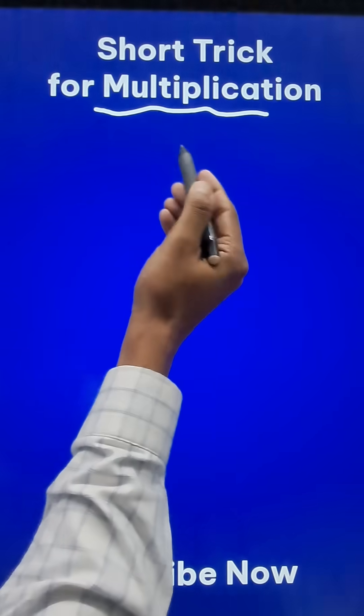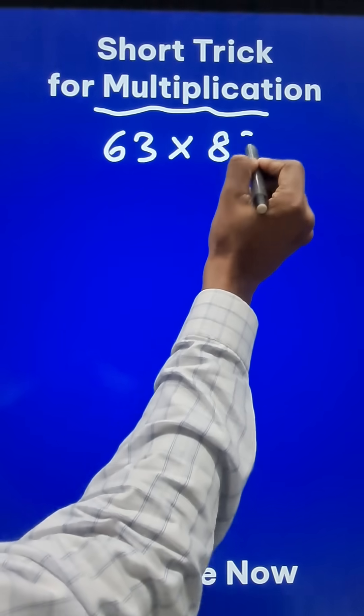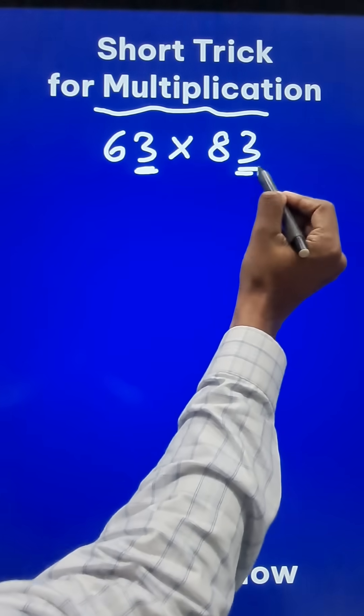Some multiplications can be done really quickly, just like 63 times 83. Here we know that both numbers are ending in 3.